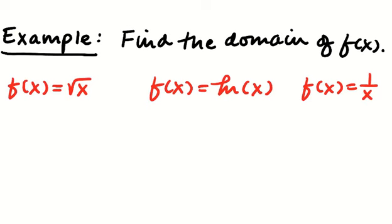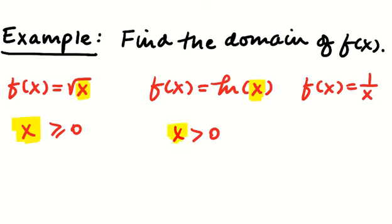So these are the things that can cause something to be undefined. When finding the domain of a function: for a square root, the thing inside needs to be greater than or equal to zero. When taking a natural log or any log, the argument has to be positive — it can't be zero or negative, so x needs to be greater than zero. When dividing, the denominator can't be zero.